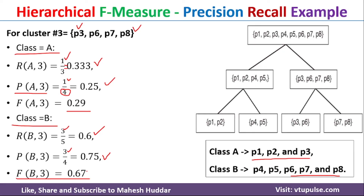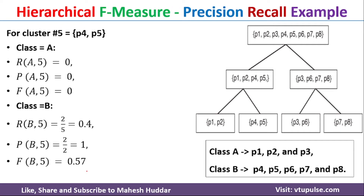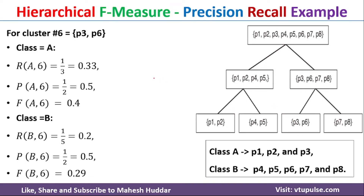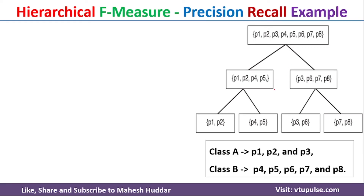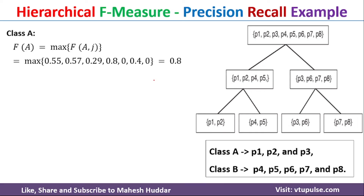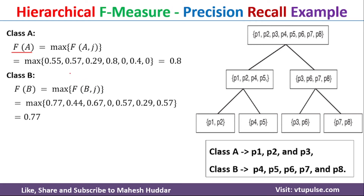Similarly, we have to do this calculation for cluster 4, cluster 5, cluster 6, and cluster 7. The same calculations are done for each of those clusters. Once you calculate the F-measure for all 7 clusters, we select the maximum F-measure for class A and the maximum F-measure for class B. The maximum among the calculated values is 0.8 for class A, and 0.77 for class B.